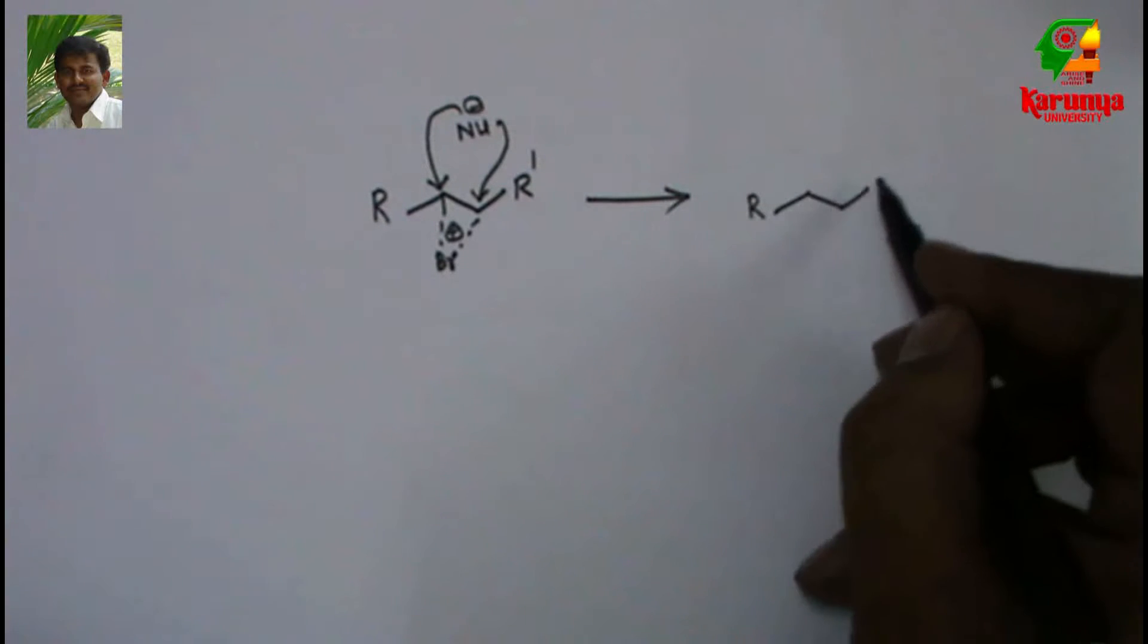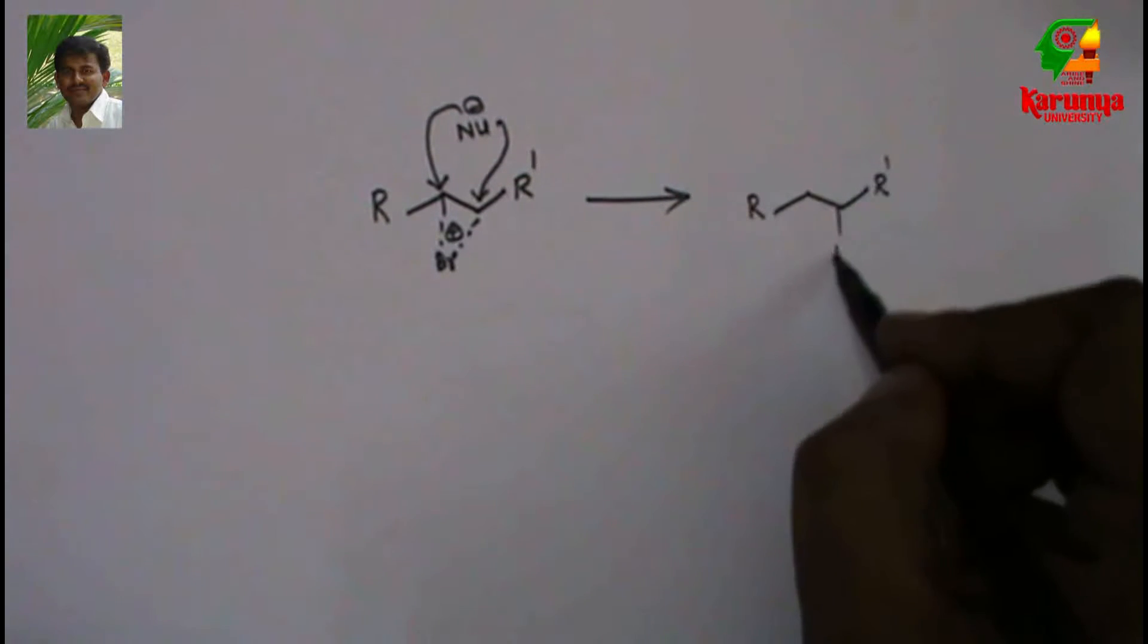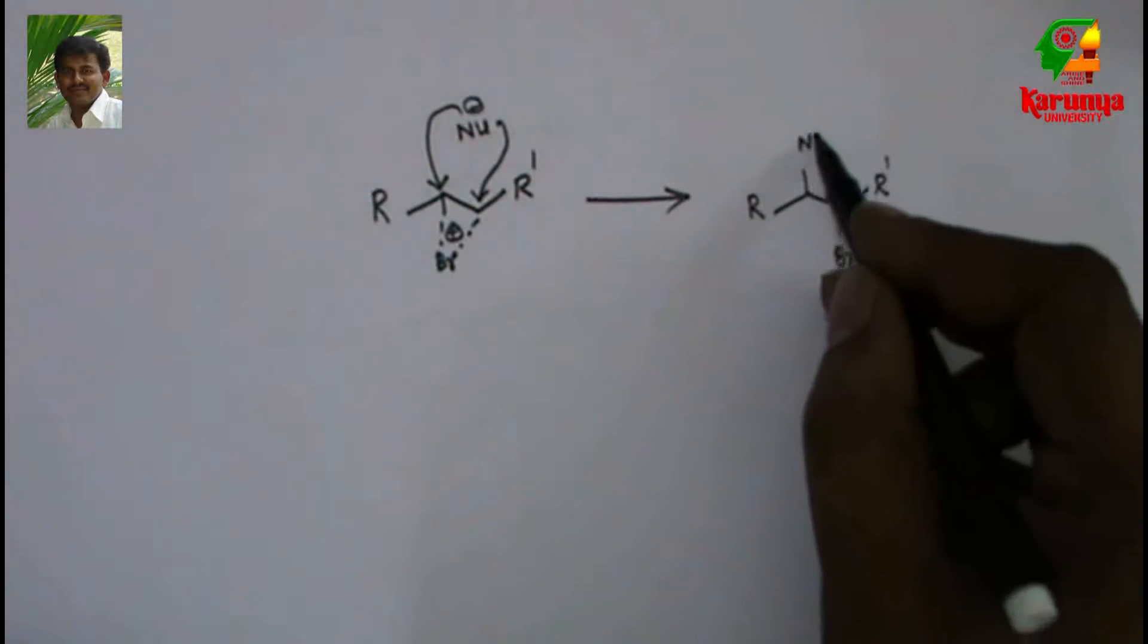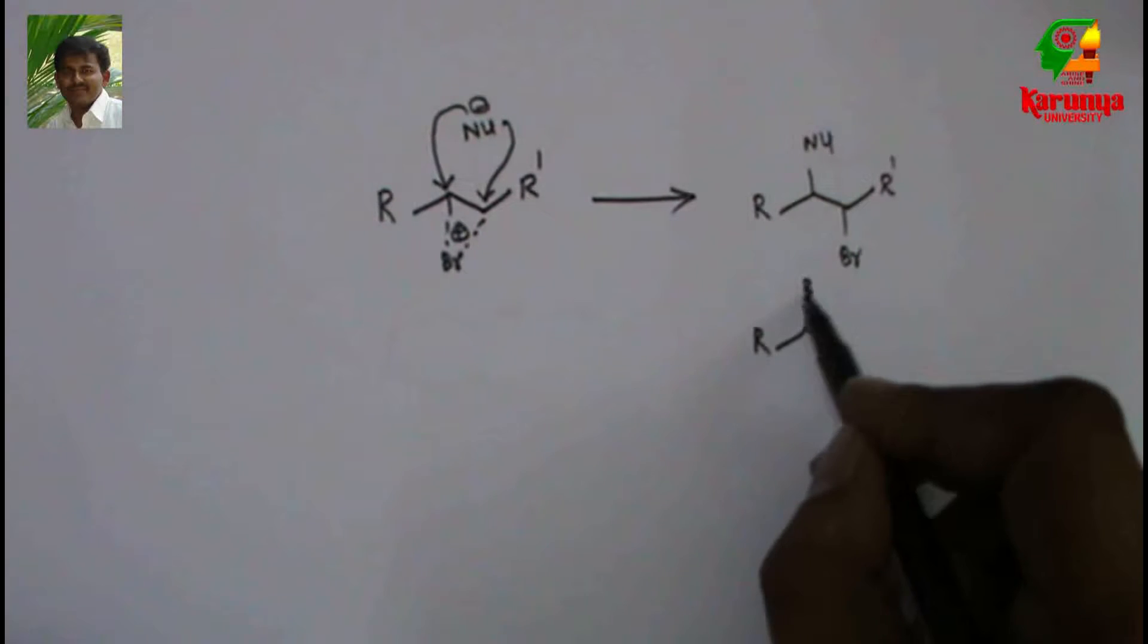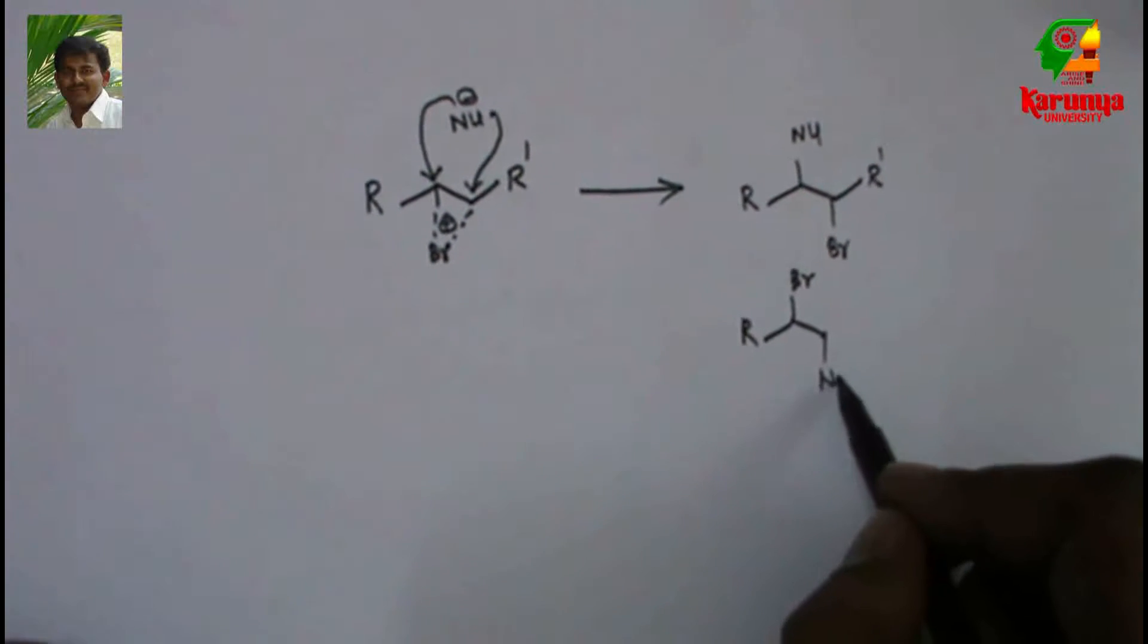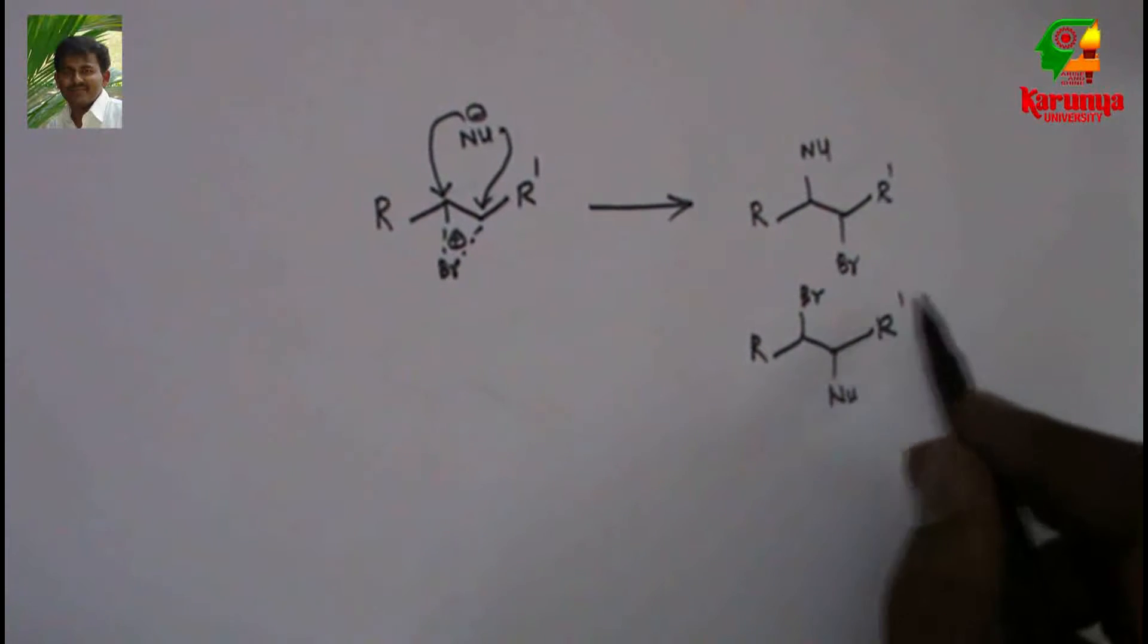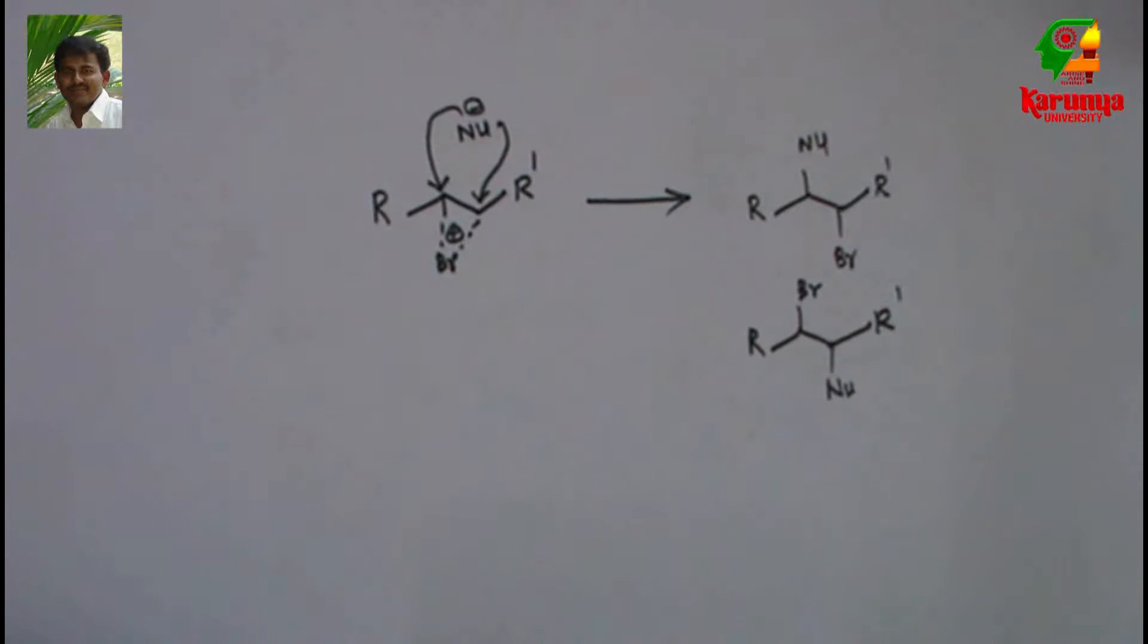In both we will get trans stereochemistry, but the regiochemistry will be different. So we get two products: one like this, another one like this. Which one will we get in our problem?